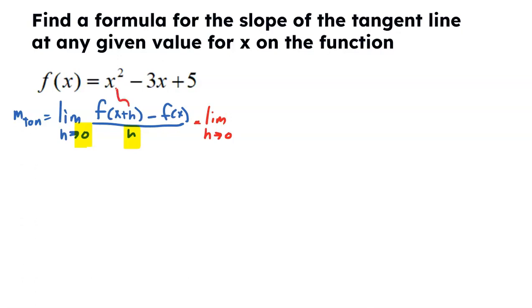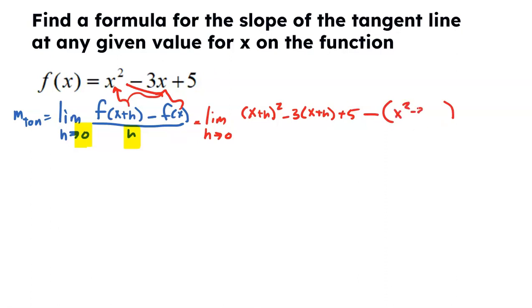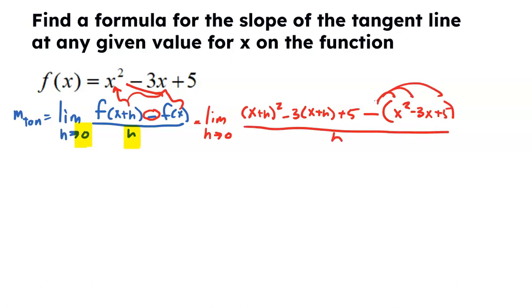Step 1: I'm going to take X plus H and plug it into my function. So I get X plus H squared minus 3 times X plus H plus 5. Now I'm going to plug X into my function. But wait — X is already plugged in. So that's X squared minus 3X plus 5. Notice how I use parentheses there, because this minus sign is going to need to be distributed through that function, all divided by H. I simply found F of X plus H by plugging X plus H into the function for X, both of them. Then I found F of X, which was just X squared minus 3X plus 5.